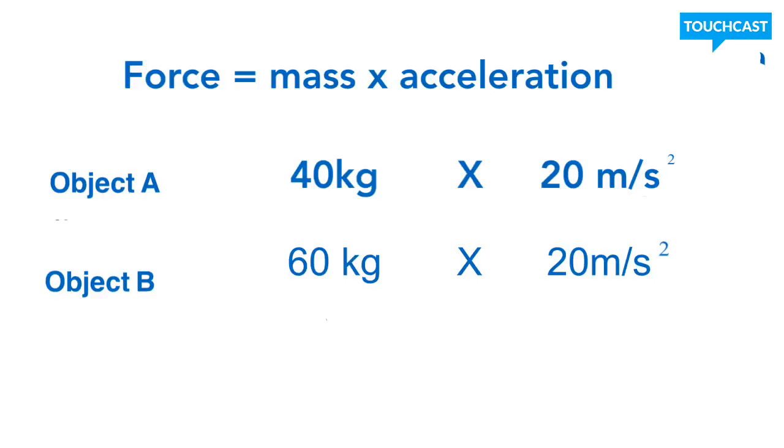Whereas with the other one, you'd have 60 times 20, giving you a total of 1200 newtons of force. So object B would have more force because it has more mass and they're traveling at the same speed. So that's kind of a good rule of thumb. If they're going at the same speed and one of them has more mass, then it will have more force.